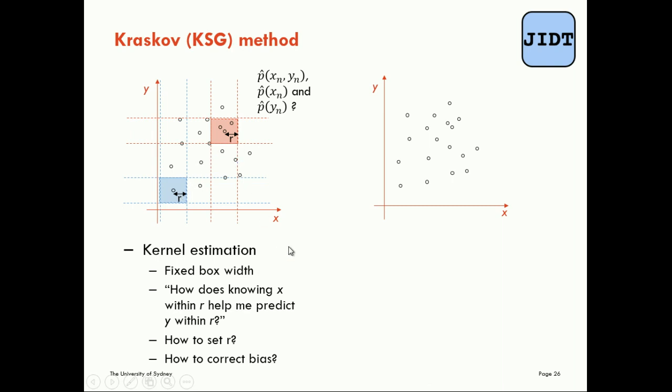We must remember it changed our question. Information theory is all about questions and answers, so for the mutual information question it changed that question to: how does knowing the value x within a radius r help me predict y within a radius r? It left a couple of questions with us. How do we set r? We know the value of the mutual information was very sensitive to that parameter. Furthermore, how can we correct the bias that came out of that estimator? We know that the values were quite biased.